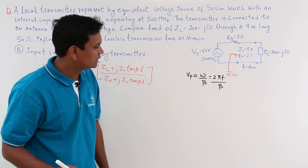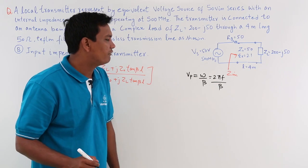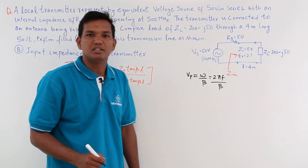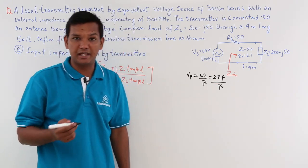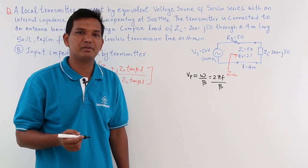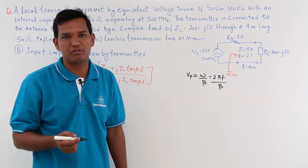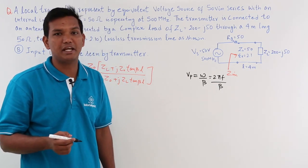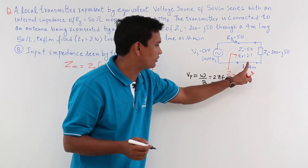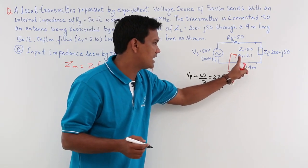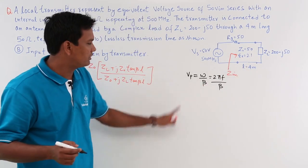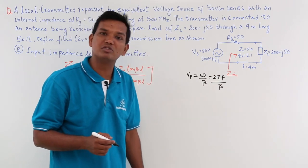Now, the other thing is what would be the phase velocity Vp. If it were an air field, we could say the velocity would be equal to the velocity of light. But it is not travelling in air — it is travelling in a Teflon medium, which has some permittivity. So we cannot say that Vp equals C.